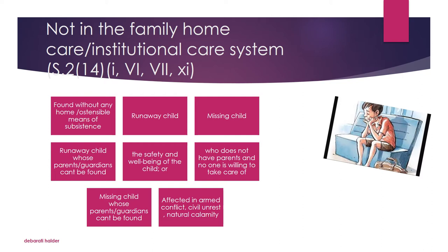Another kind of child is the missing child. This missing child and the runaway child can be overlapping with each other, but missing children may also be those who have been forcefully taken away from their parents or guardians — coming under the broader umbrella term of kidnapping, abduction, etc. They might also be children who have accidentally gone missing from their families.